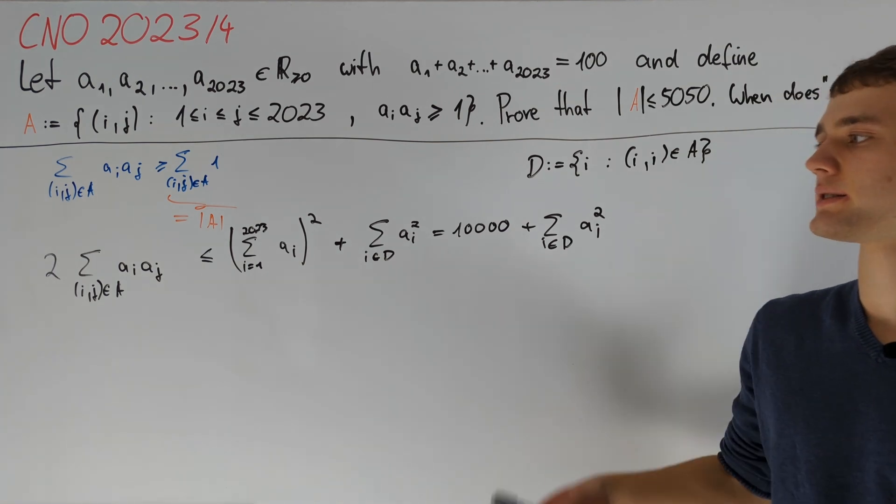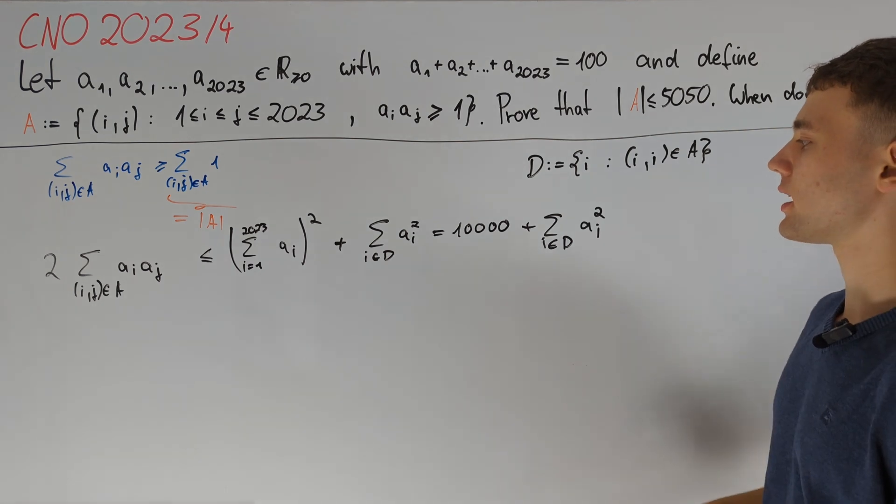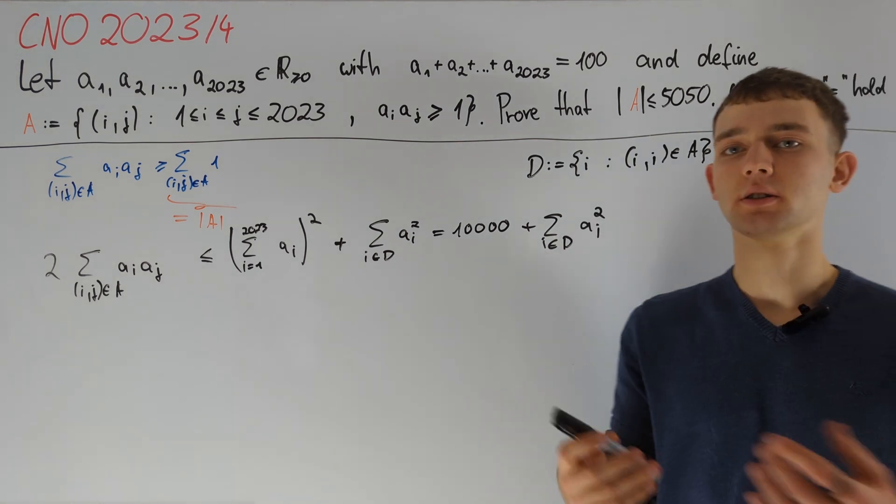The right side here is just 100 squared plus the sum of i in d of a_i squared. If we recall that it is enough to show that this sum is at most 5050, then it would also be enough if we could prove that the sum of i in d of a_i squared is at most 100.